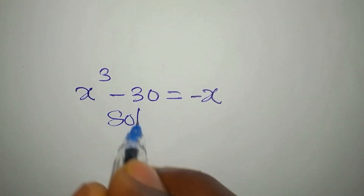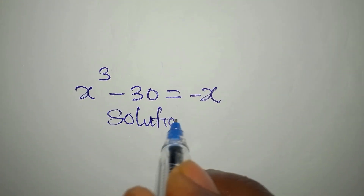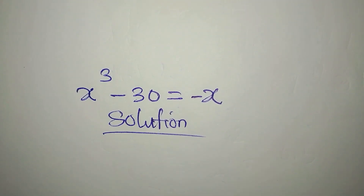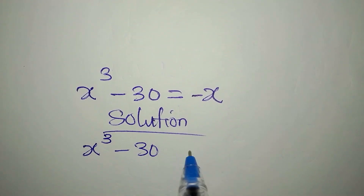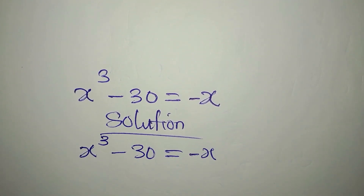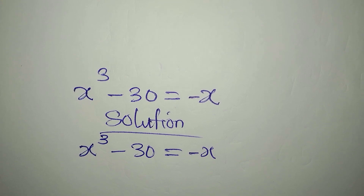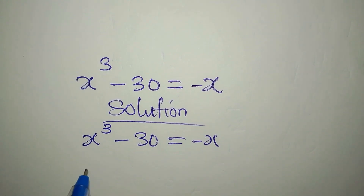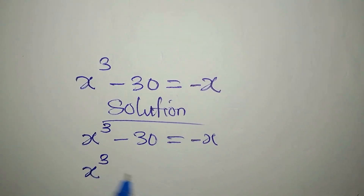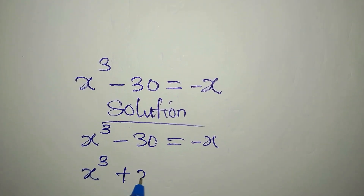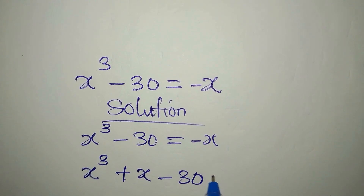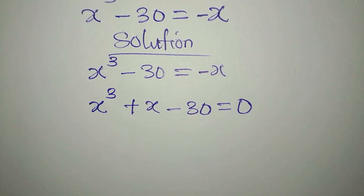Let's provide the solution to this problem: x to the power of 3 minus 30 is equal to negative x. The first step is to collect like terms together. There is x on both sides, so we have x to the power of 3 plus x, and this is minus 30, then zero on the right, giving us x³ + x - 30 = 0.